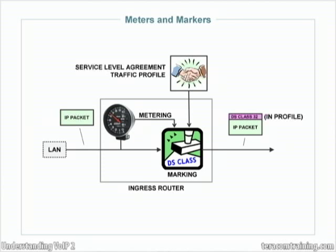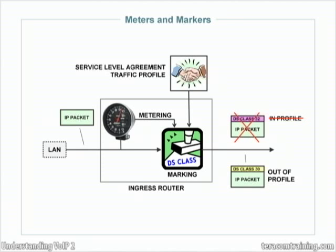The marker is the device that puts the DiffServ code point, the DS class number, in that field. As long as they remain within their traffic profile, all of these packets are going to get labeled as belonging to DS class number 32. However, if they try to transmit more and go out of profile, the meter will tell the marker to stop marking them with DS class 32 and mark them with a lower class number like DS class 30. In the network, those packets will experience a different forwarding behavior — in other words, a lower priority.